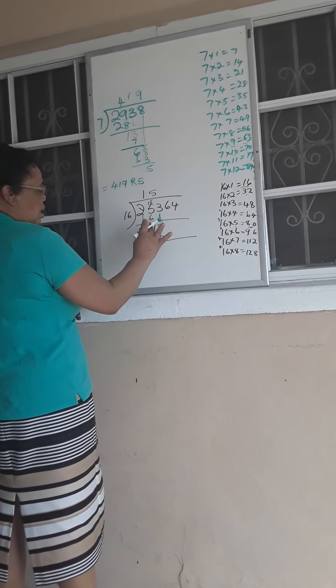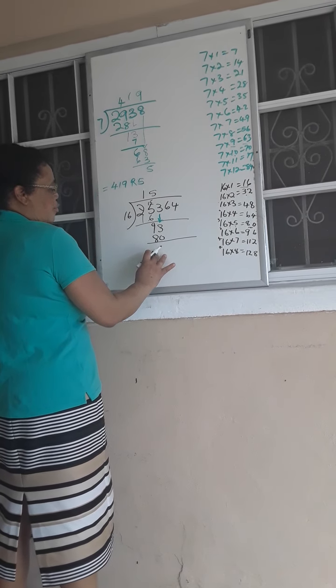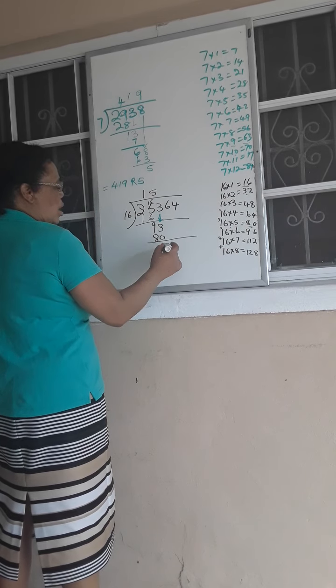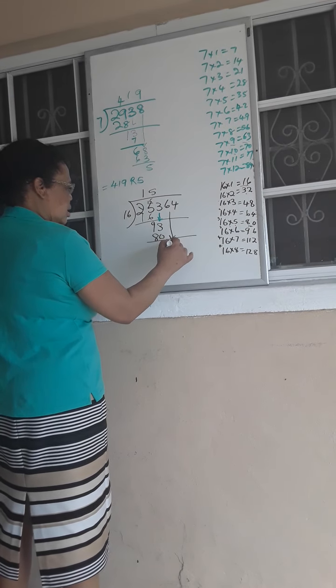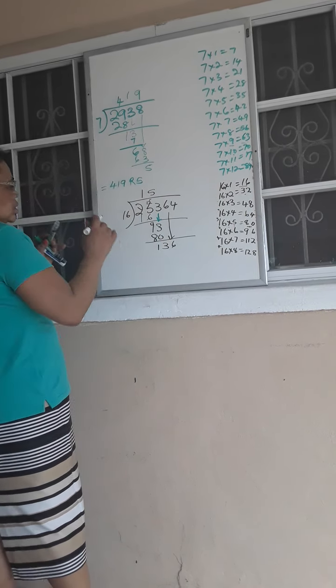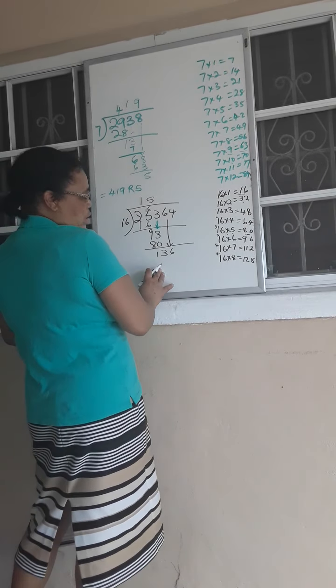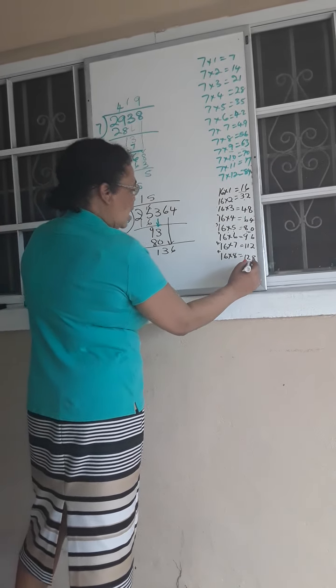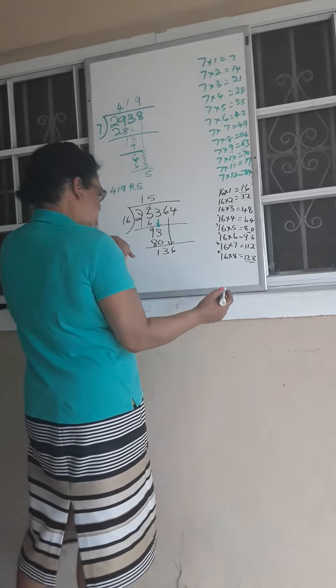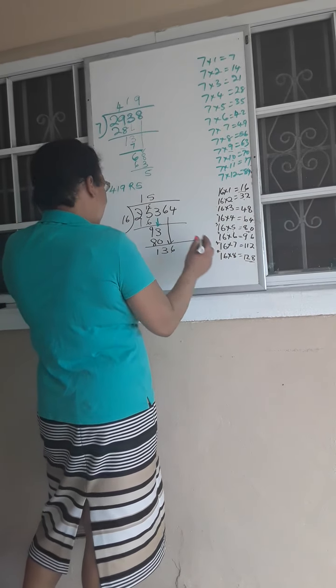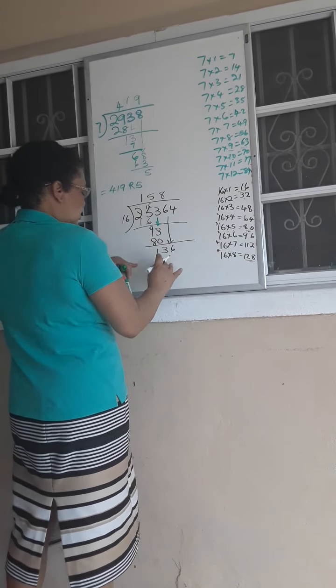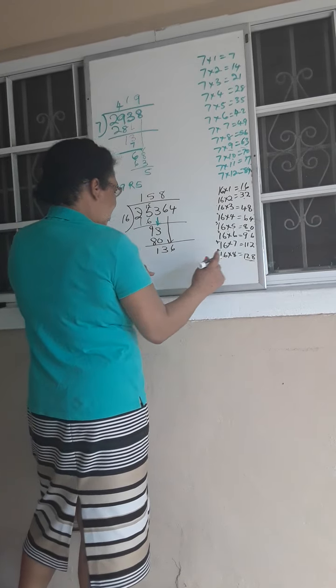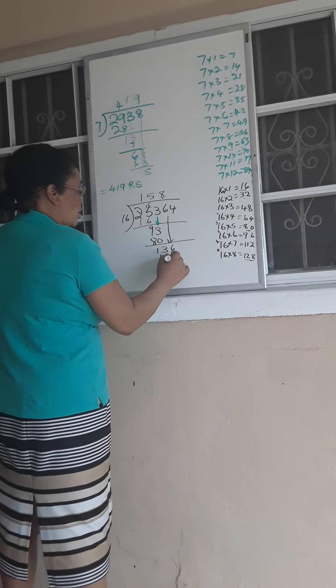So what am I going to be left with here? I'm going to be left with 13. I'm going to bring down this 6. 16 into 136. I think I can stop right here. That's going to give me 8 times. 16 into 136 is going to give me 8 times. That's going to be 128.